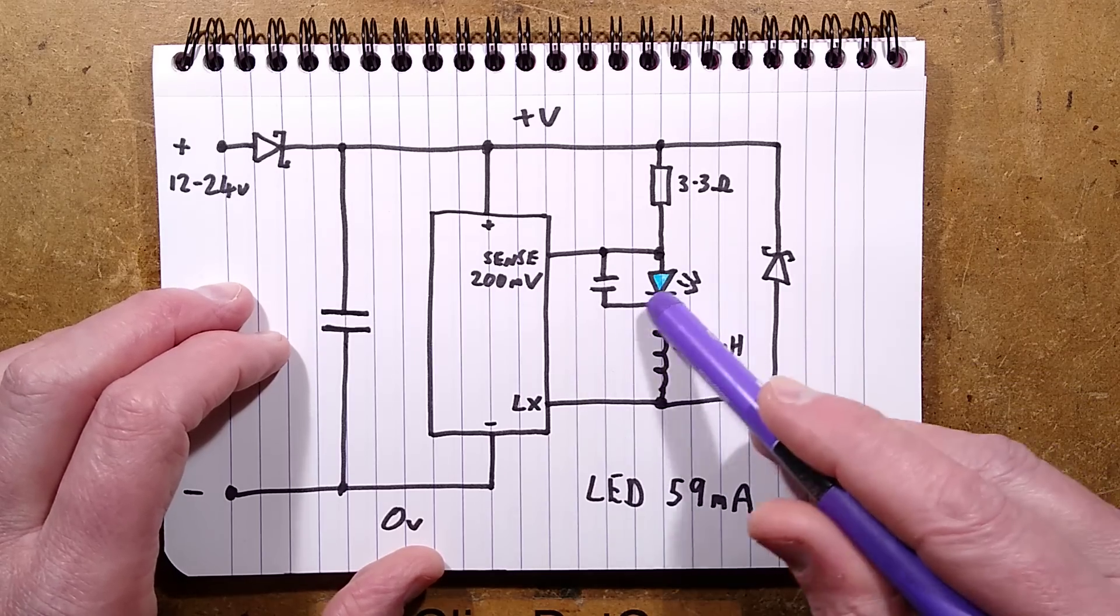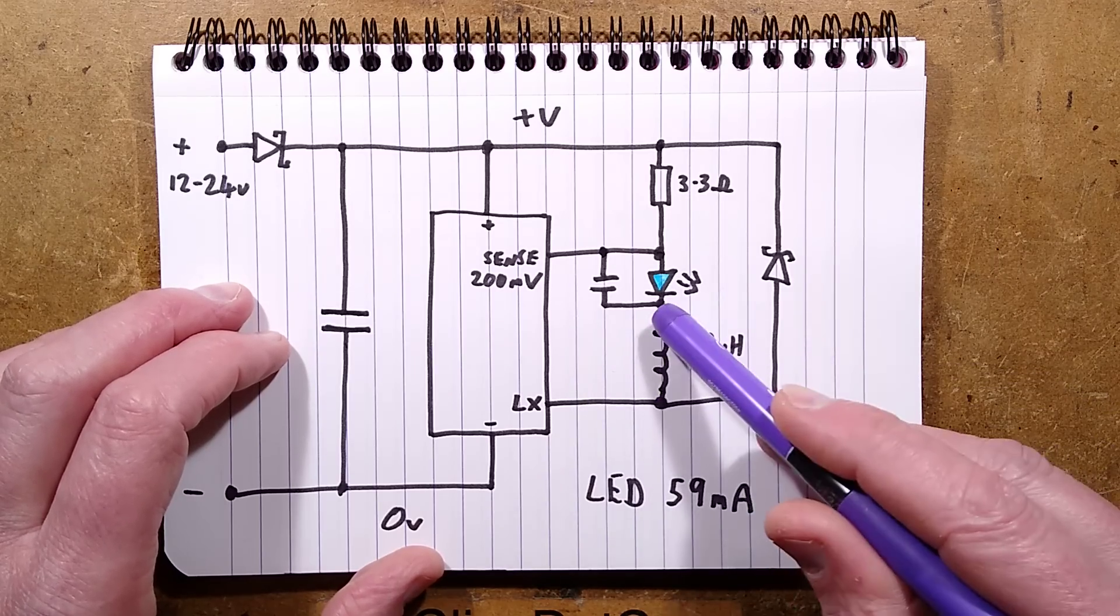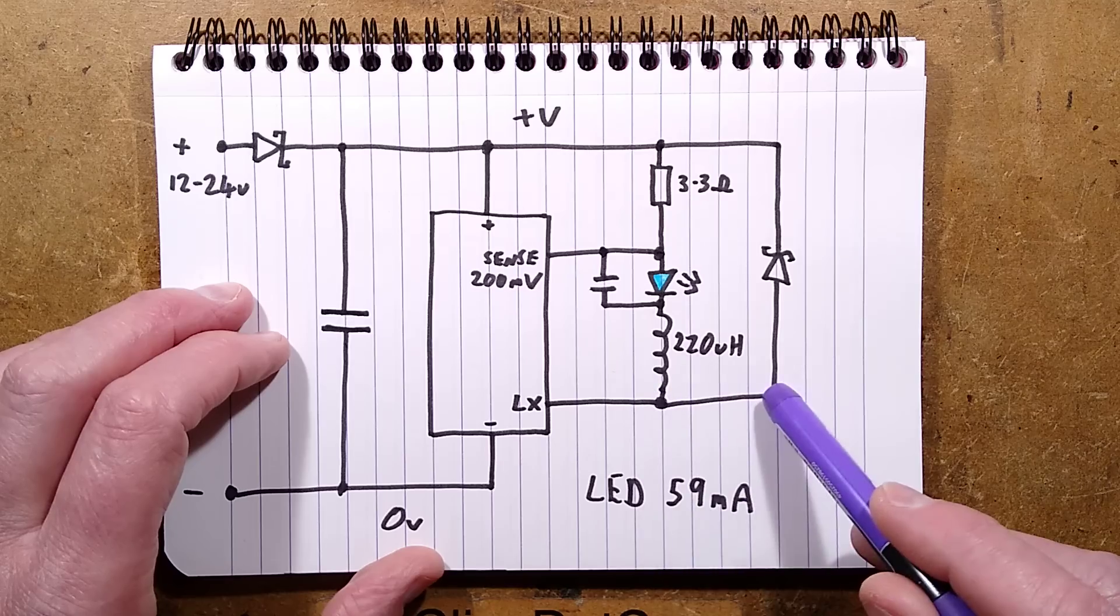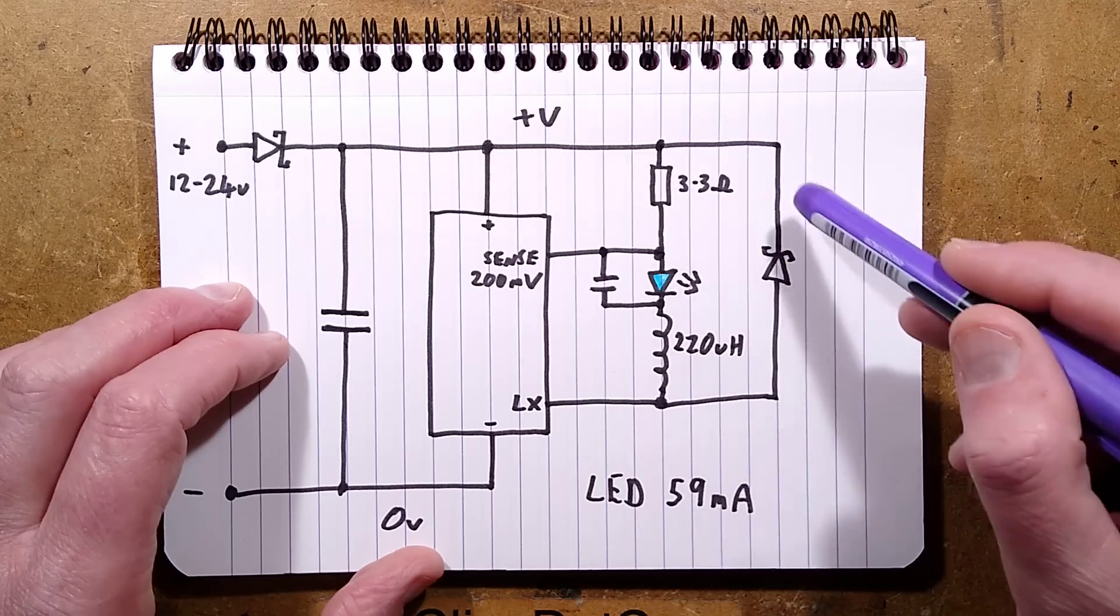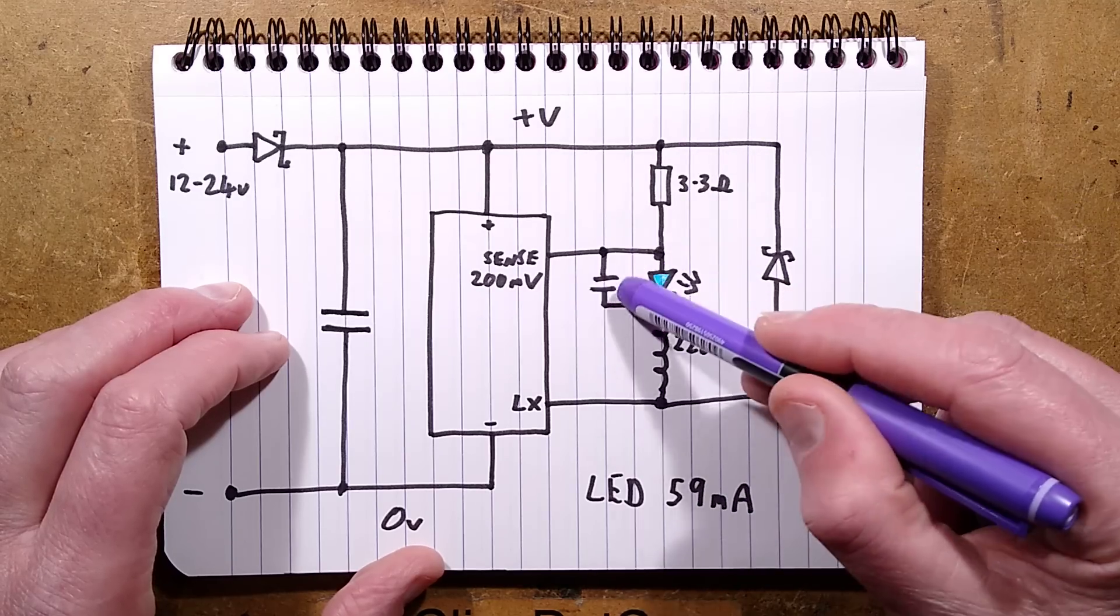When it turns off, the magnetic field across the inductor collapses and it produces reverse voltage which then goes through this extra Schottky diode and gets channeled through the LED to charge up that capacitor.